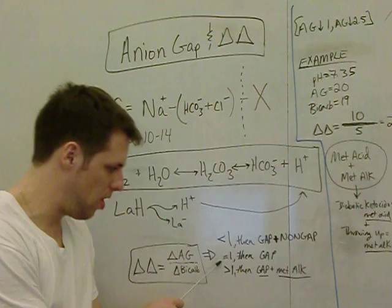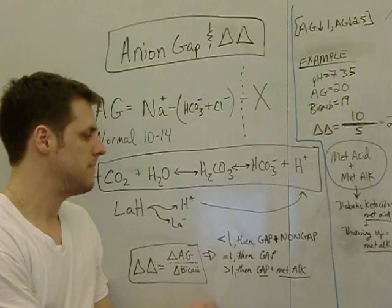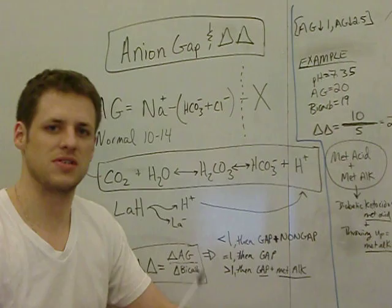A little confusing, but think about that again. If it's equal to 1, you have a gap acidosis. That means every time you have a change in anion gap, it's reflected in the change in bicarb. So again, to review, anion gap goes up 10, bicarb goes down 10. Gap acidosis, end of story.